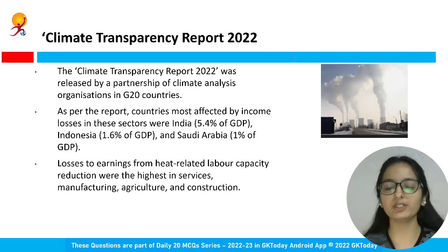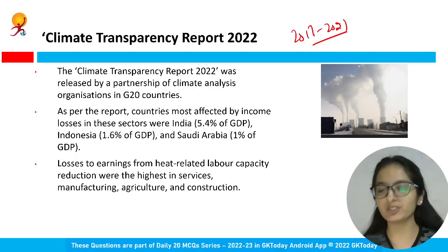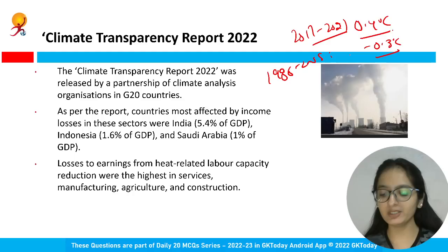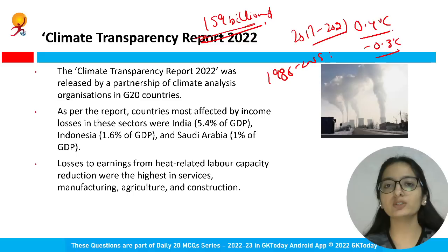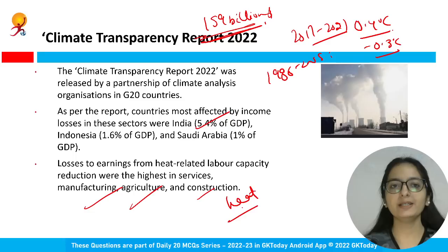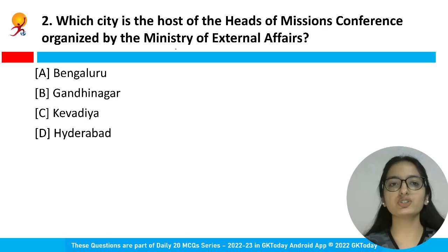From 2017 to 2021, the summer temperatures experienced by people averaged 0.4 degrees Celsius higher than in 1986 to 2005, which was 0.3 degrees Celsius. Due to this increasing temperature, India suffered an income loss of 159 billion dollars — 5.4 percent of GDP — in services, manufacturing, agriculture, and construction sectors due to extreme heat.